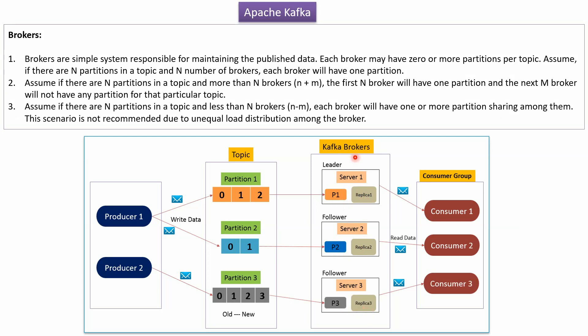Now we will see Kafka brokers. There are 3 Kafka brokers. Server 1 is one Kafka broker, server 2 is another Kafka broker, and server 3 is another Kafka broker. Server 1 is the leader, and server 2 and server 3 are followers.